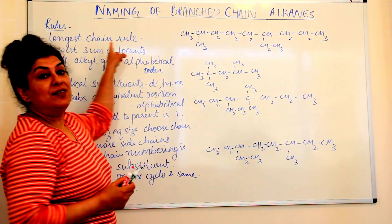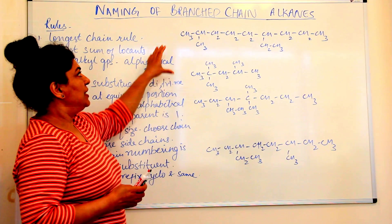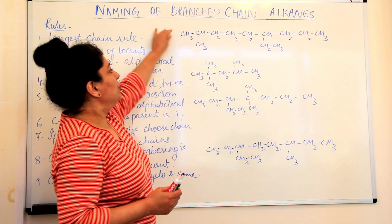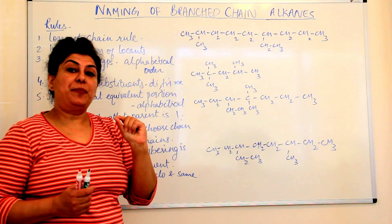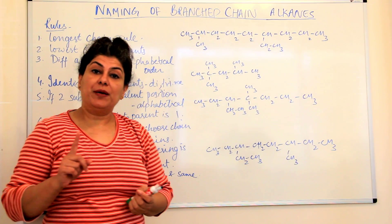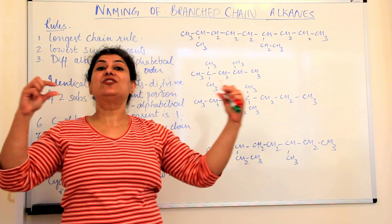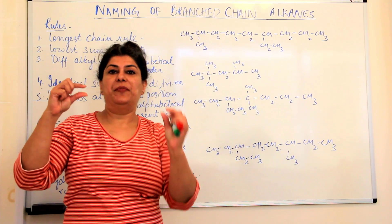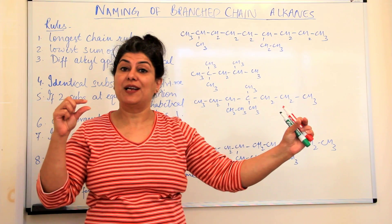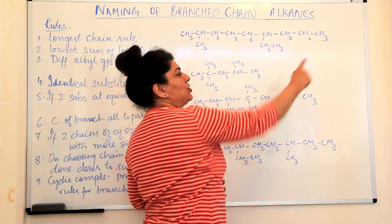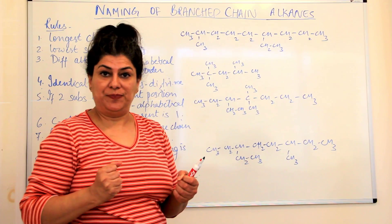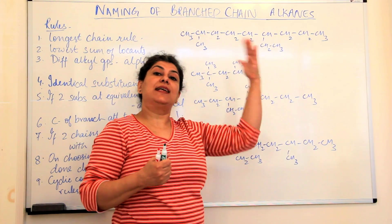The first rule is the longest chain rule. The first step is to choose the longest chain that is possible in the compound. Keep in mind it's not necessary that the longest chain appears to be straight — the longest chain could be branching out and would have a larger number of carbon atoms. A straight or zigzag chain which has the largest number of carbon atoms is chosen as the parent hydrocarbon and the alkane is named as that parent hydrocarbon.